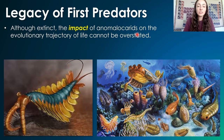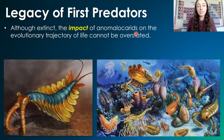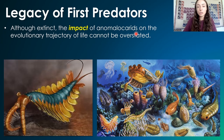So even though anomalocaridids — the very first apex predators of Earth — are now extinct, their impact long after they went extinct cannot be overstated. They really set Earth on a trajectory of evolutionary advancement and diversification.